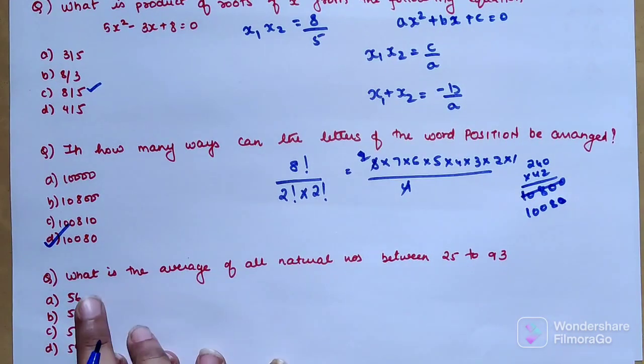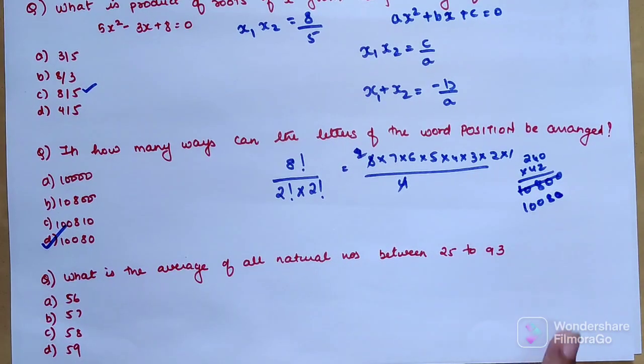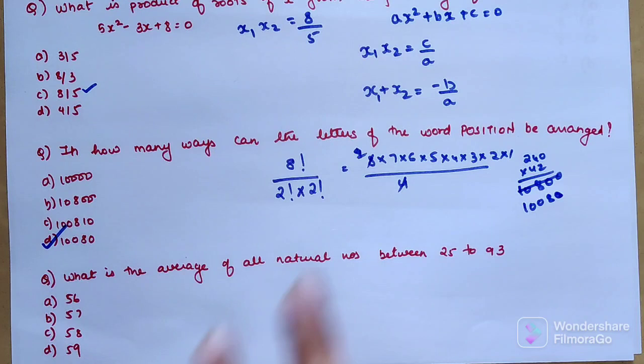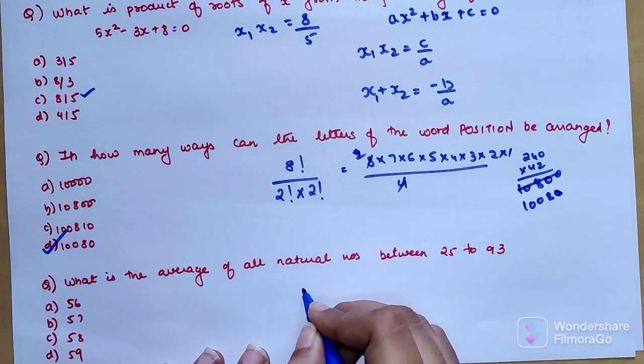Next: what is the average of all the numbers between 25 and 93? Please understand, you do not have to use arithmetic progression here. You will solve this entire question in two seconds. But before going ahead, please hit the like button because that gives me tremendous encouragement in doing these videos.